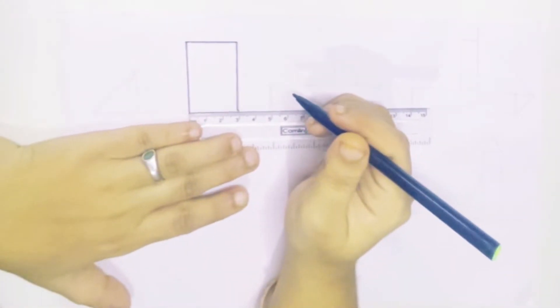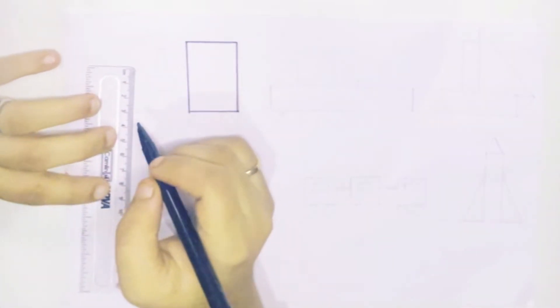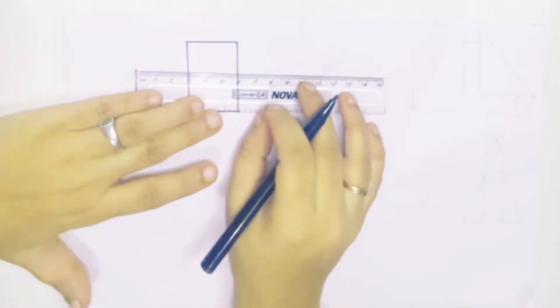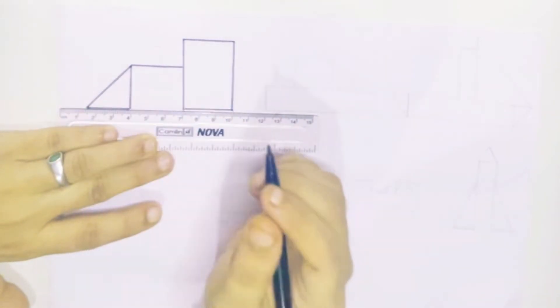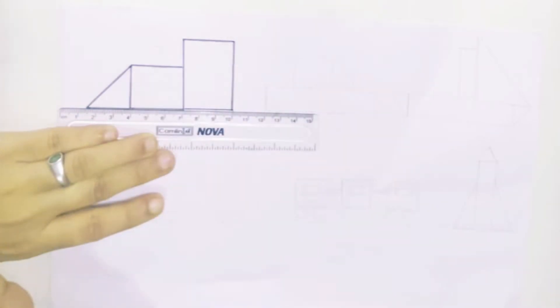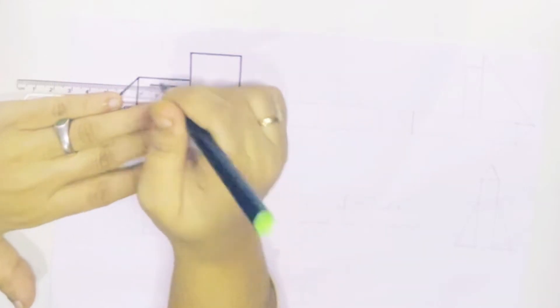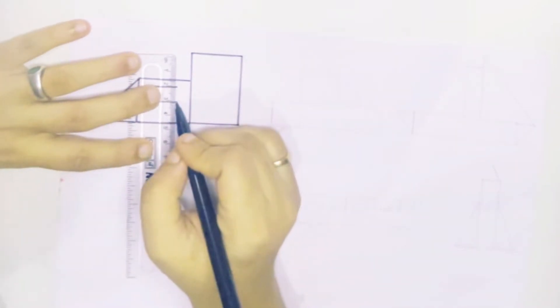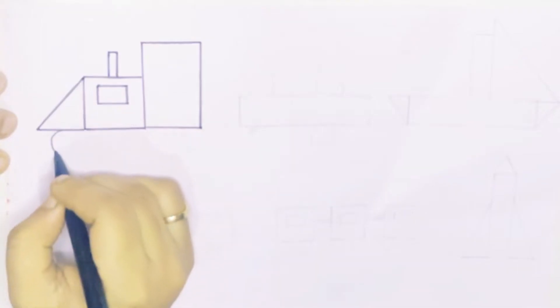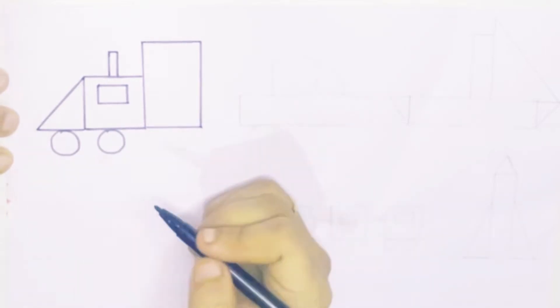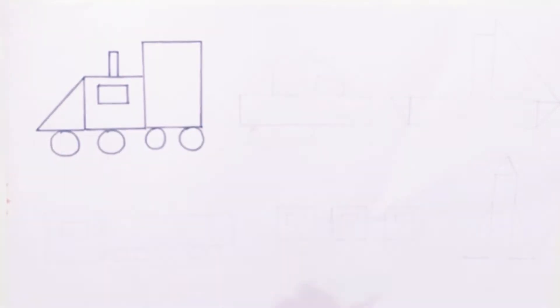First we are drawing a train engine using different shapes. This is a rectangle shape, this is a square shape. Now we are drawing a rectangle and a triangle, a small rectangle, and a very small rectangle shape. Drawing a circle shape for wheels.